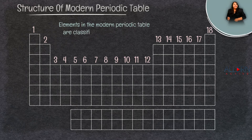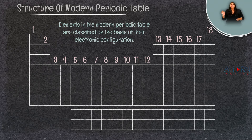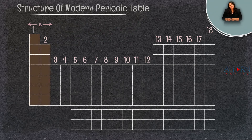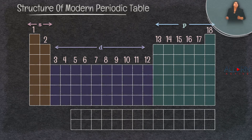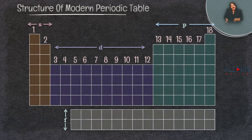He made sure that elements in the modern periodic table were classified on the basis of their atomic numbers and electronic configurations, and not on the basis of their atomic masses. Hence, he categorized them into blocks: the S block, the P block, the D block, and the F block.